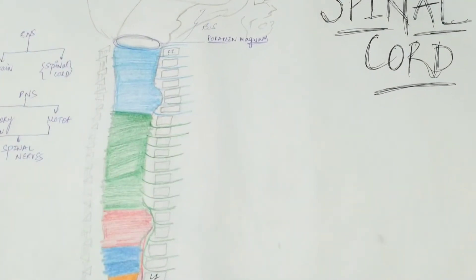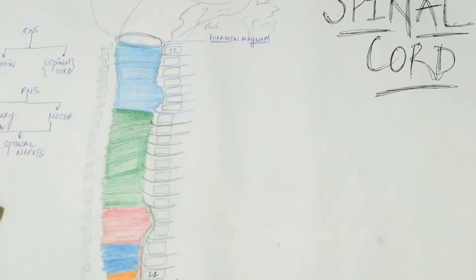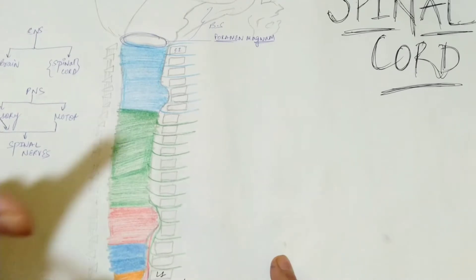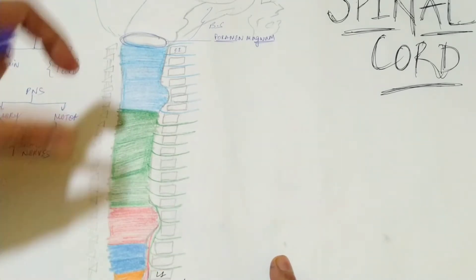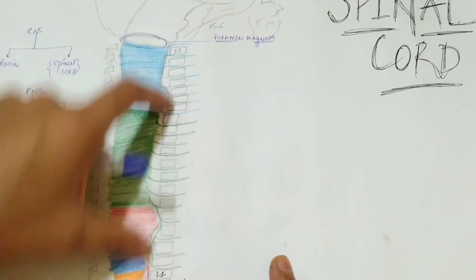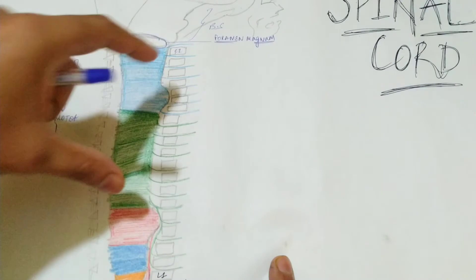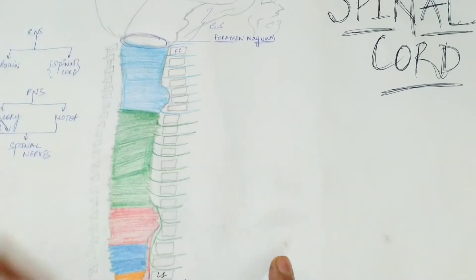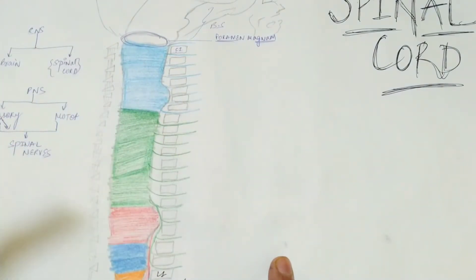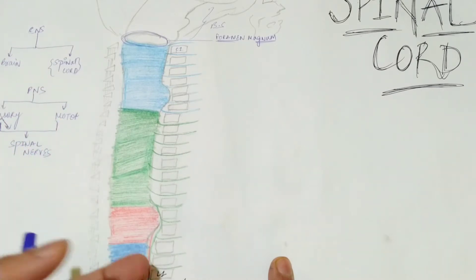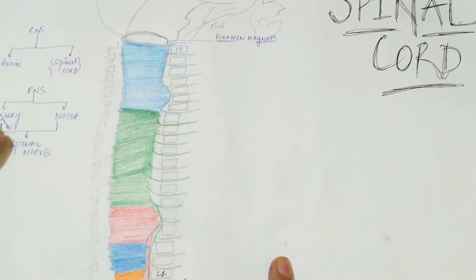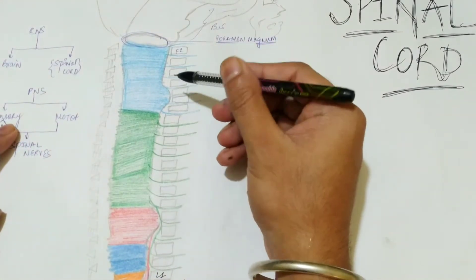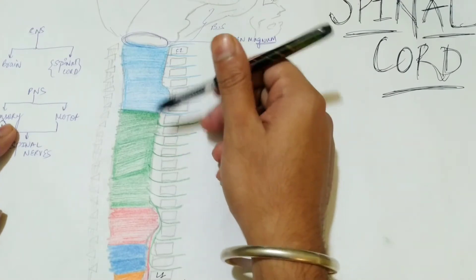The spinal cord is made up of nervous tissue and is a tubular structure present between the vertebral columns. Now let's look at the segments of the spinal nerves. There are five segments, just like the vertebrae: cervical, thoracic, lumbar, sacrum, and coccyx.